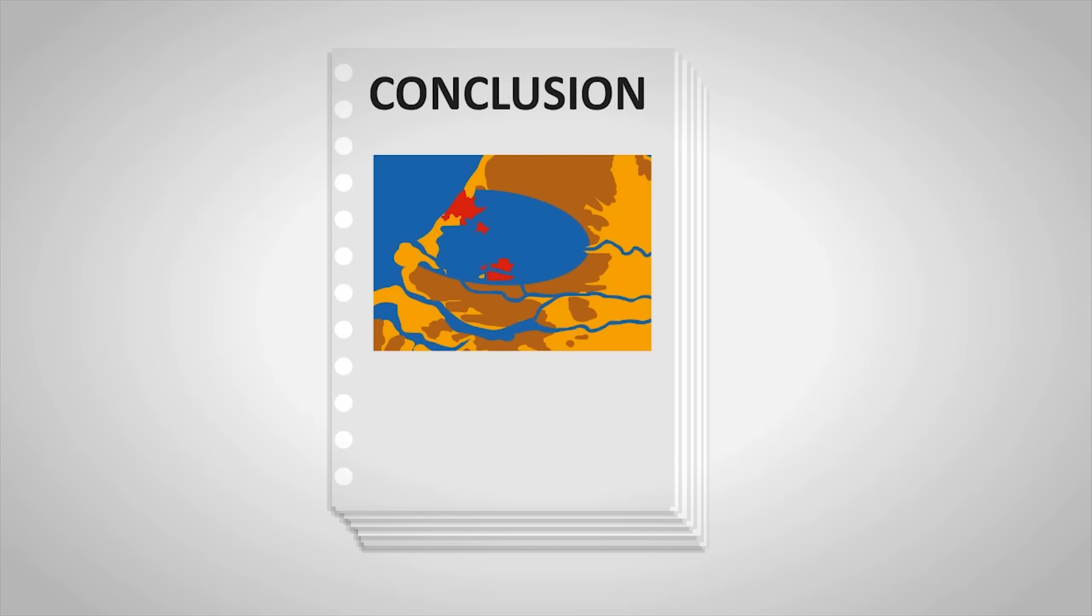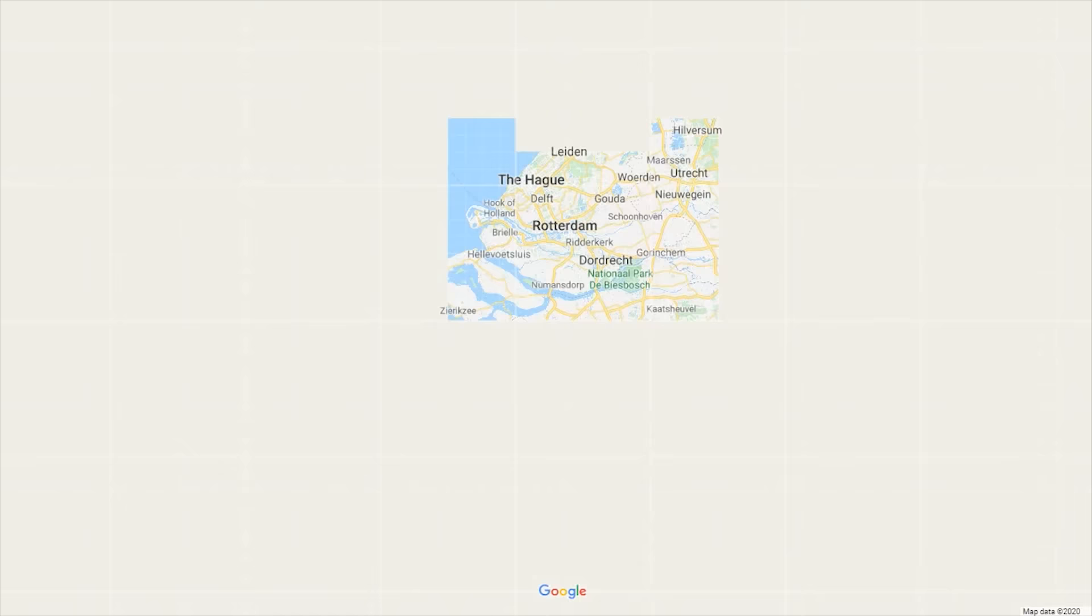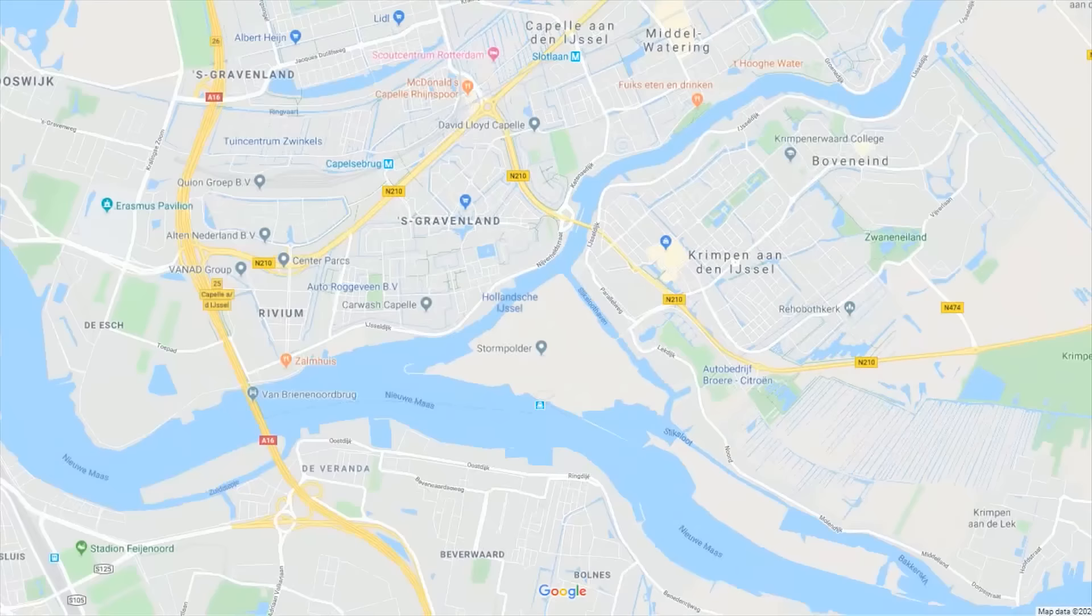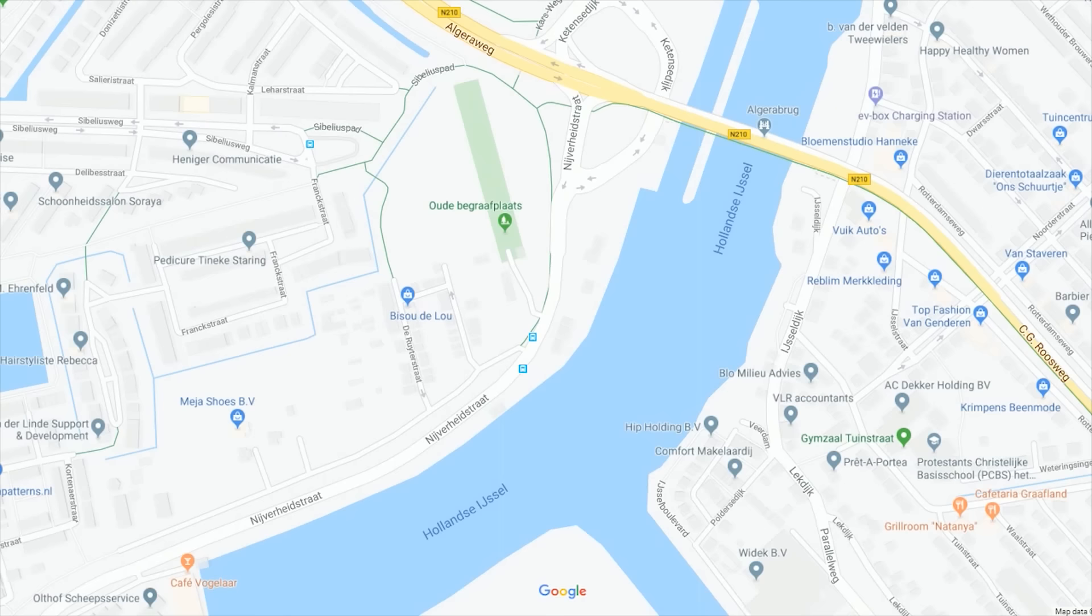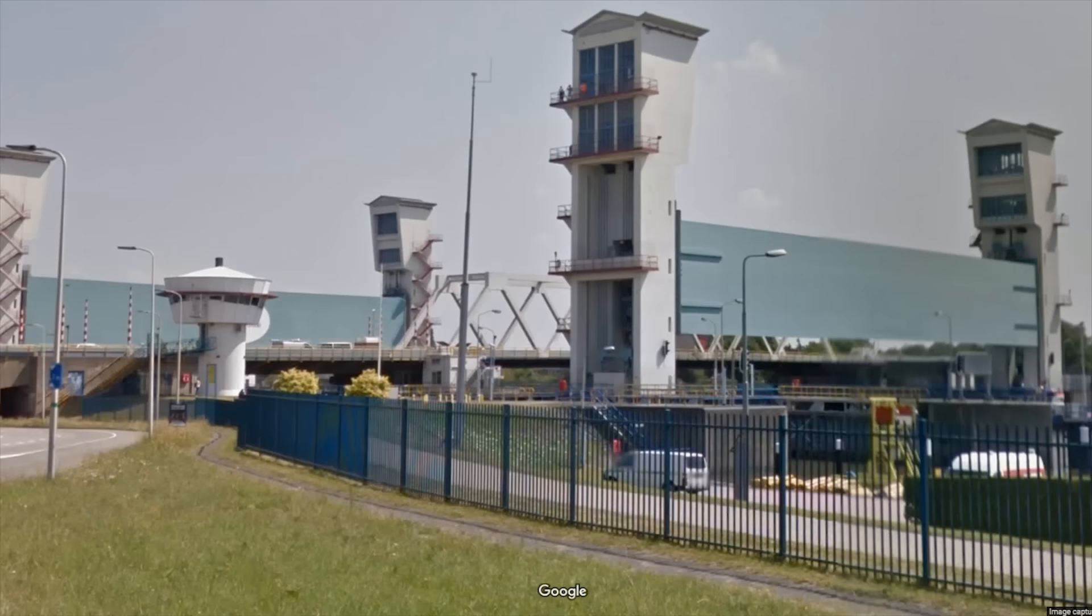And so, when the Delta committee published their findings on just how vulnerable this area was, the local governments immediately funded the flood barrier which the committee had suggested, without waiting for the national government to approve funding. They built it right here, at the Hollandse IJssel bridge. The flood barriers would be hoisted above the river to allow ships to pass underneath but can be lowered into the river in case of a flood.